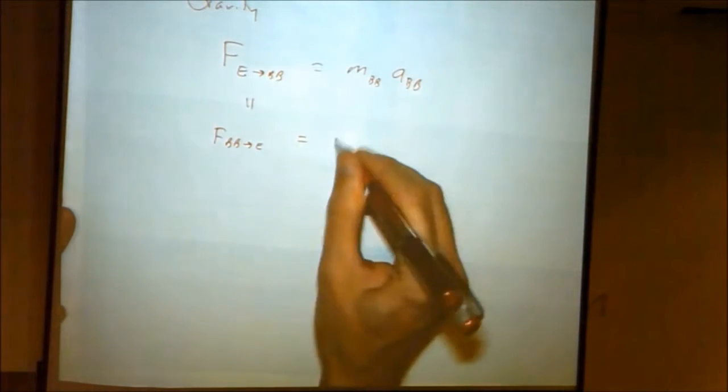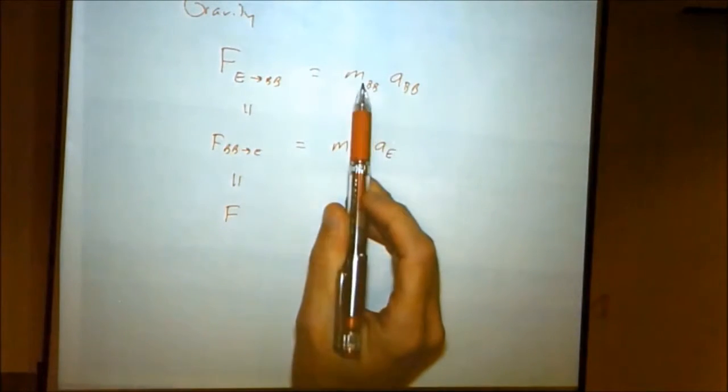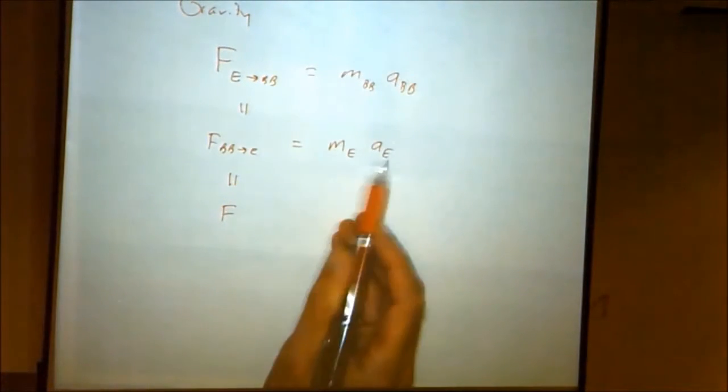By Newton's third law, there is an equal and opposite force — the force of the baseball acting on the earth. We never really think about that one, but it's the same magnitude as the force of the earth acting on the baseball, given by the mass of the earth times the acceleration of the earth. The baseball experiences a bigger acceleration because its mass is low. But the force of gravity of the baseball tugging on the earth gives the earth a very, very small acceleration because its mass is so huge. We don't notice the earth falling toward the baseball, but it's there — those two forces are equal.